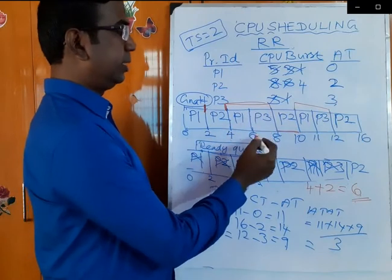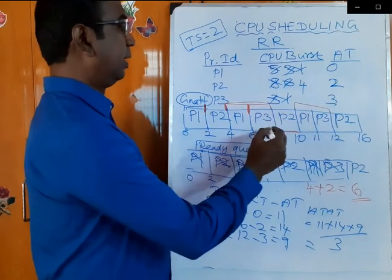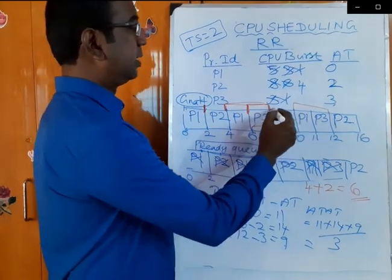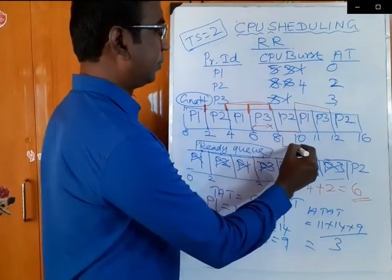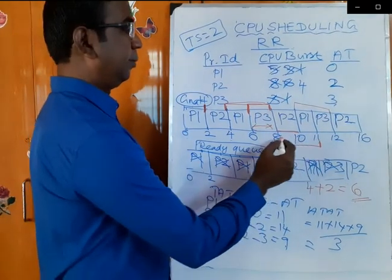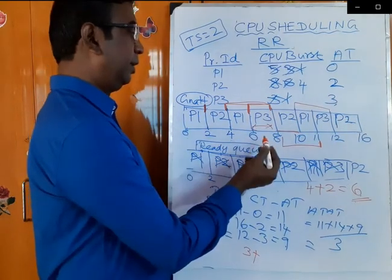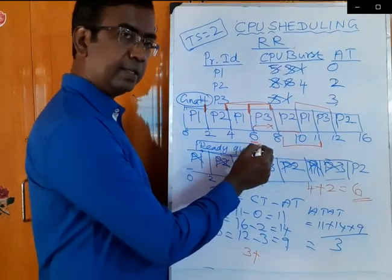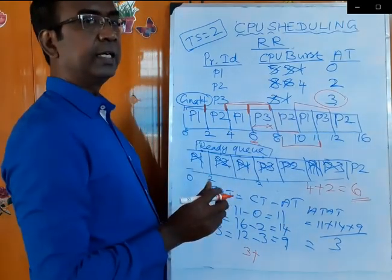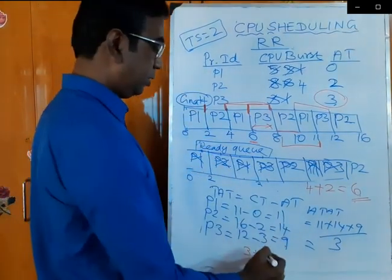For P3's conceptual waiting time: when P3 enters the CPU at a certain position and executes, that time is not counted. We consider the waiting time of 11 minus 8 equals 3, plus from the third second when P3 entered the ready queue to the sixth second when it got the CPU — from third to sixth second it is waiting, which is 3. Total waiting time for P3 is 6.